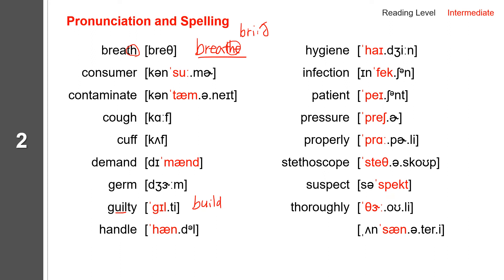And the last one: unsanitary. Unsanitary spells U-N-S-A-N-I-T-A-R-Y. Unsanitary. Now a review: breath, consumer, contaminate, cough, cuff, demand, germ, guilty, handle, hygiene, infection, patient, pressure, properly, stethoscope, suspect, thoroughly, unsanitary.